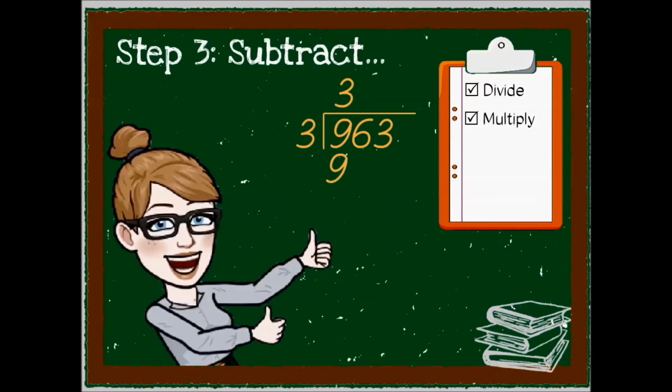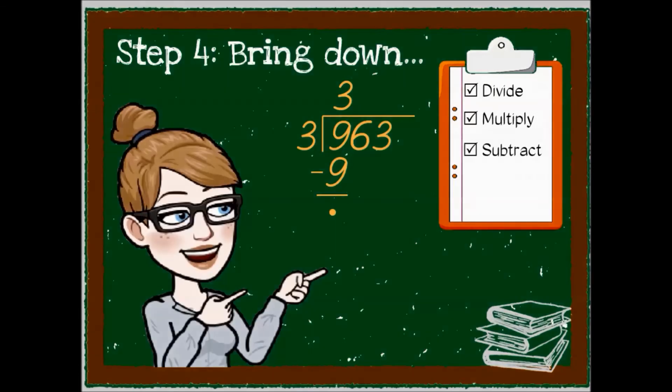Keep on dancing because our next step is to subtract. 9 minus 9 is 0. When we write a zero, we make a little dot. Subtraction, tick. We have danced all the moves we can with 9. Now, 3 wants to dance with 6. 6 has to come out of the house to dance, and it steps all the way to the dot.